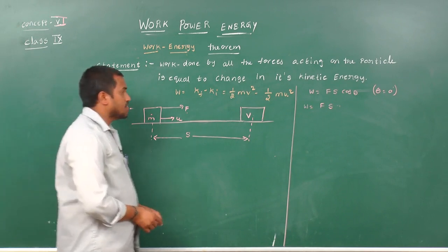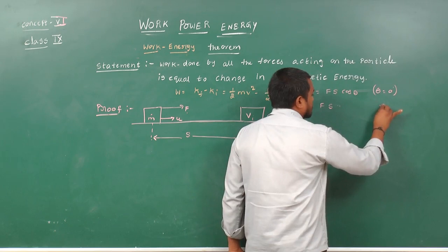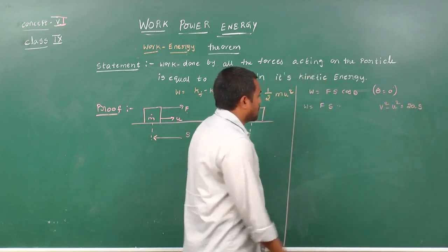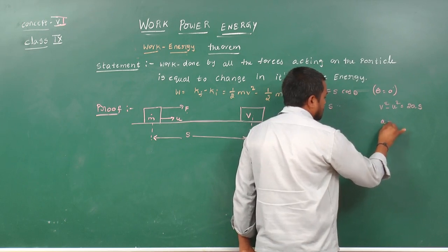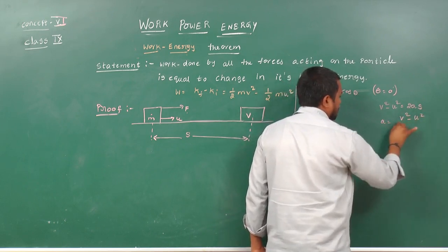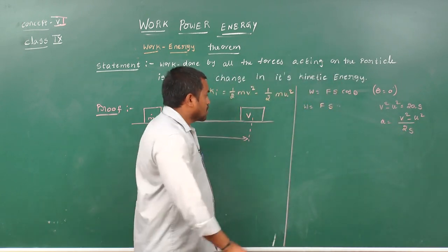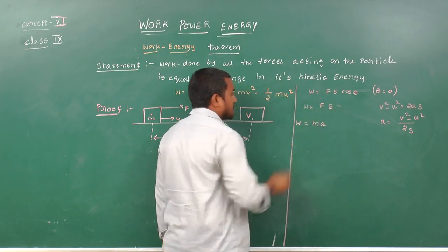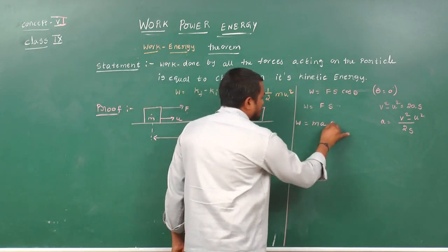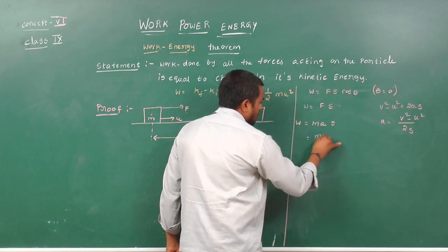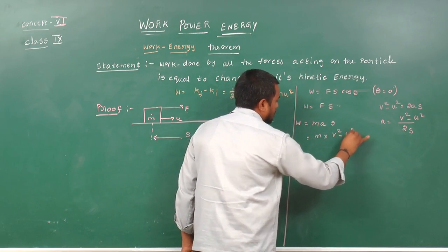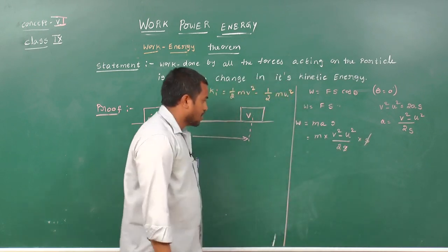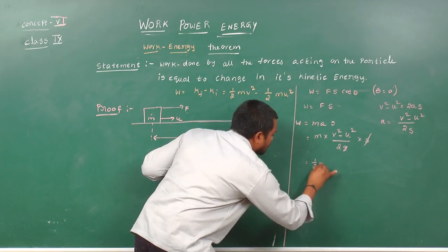According to the third equation of motion: v squared minus u squared equals 2as. From this, acceleration a equals (v squared minus u squared) divided by 2s. Substituting F according to Newton's second law, F equals mass times acceleration (when mass is constant), into displacement s: work done equals m times (v squared minus u squared) divided by 2s, times s, which gives one-half m v squared minus one-half m u squared.